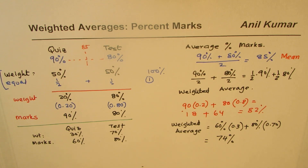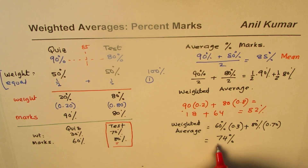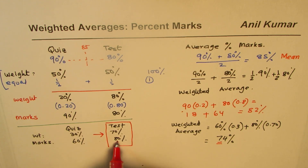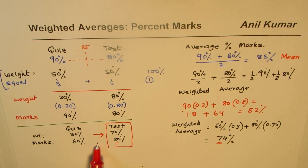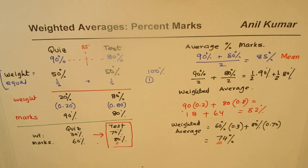Since the weight is more for the test, our average shifts towards the higher mark which is 80. It is not 70 — normally if the weights were equal you'd get 70 — but we got 74, since the test with higher weightage is where the person scored higher marks. I hope this illustrates the importance of weighted averages and how we find it. Thank you and all the best.